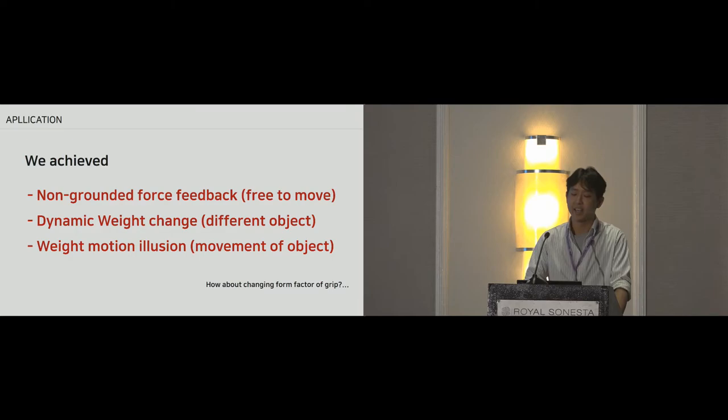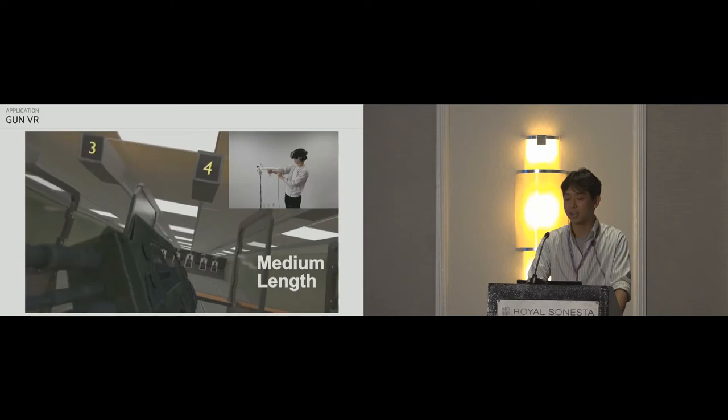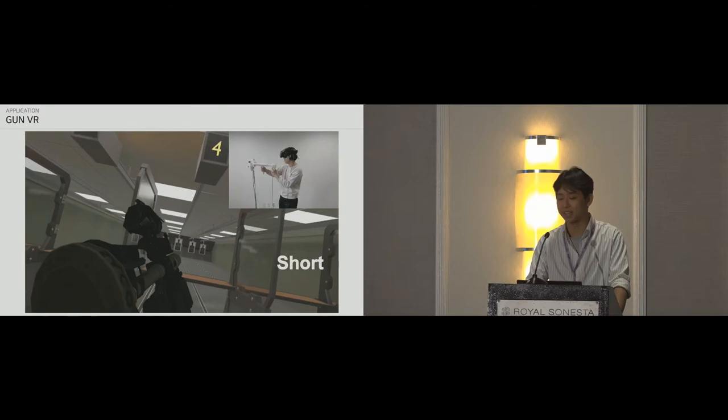We also had explored the potential of Aeroplane for simulating different weights and shapes of virtual objects. Here we 3D printed a simple handle that can be attached to the original Aeroplane and can be held using two hands. Mimicking a gun grip, Aeroplane is able to simulate the change of weight of different guns and can generate kick bursts of strong feedback to create the illusion of recoil.